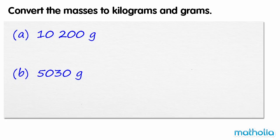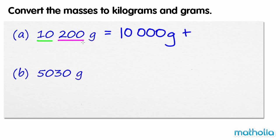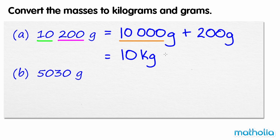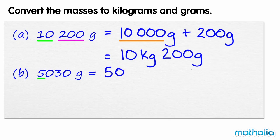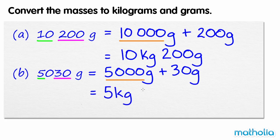Convert the masses to kilograms and grams. We can rewrite 10,200 grams as 10,000 grams plus 200 grams. 10,000 grams equals 10 kilograms, 200 grams. We can rewrite 5,030 grams as 5,000 grams plus 30 grams. 5,000 grams equals 5 kilograms, so 5,030 grams equals 5 kilograms, 30 grams.